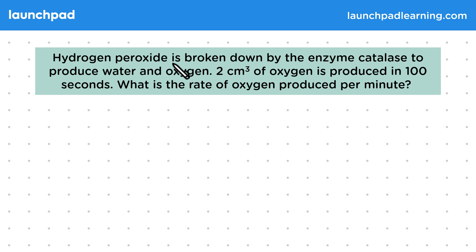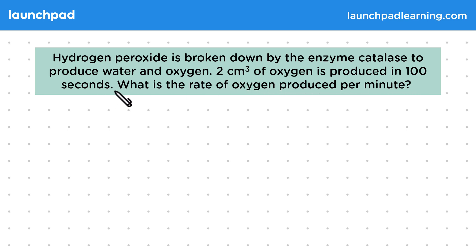Hydrogen peroxide is broken down by the enzyme catalase to produce water and oxygen. Two centimetres cubed of oxygen is produced in 100 seconds. What is the rate of oxygen produced per minute?